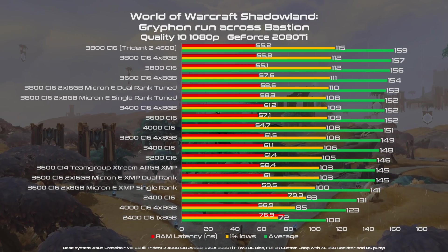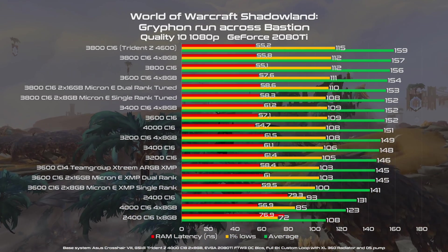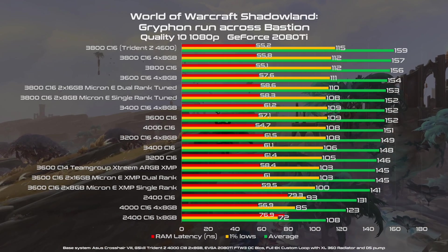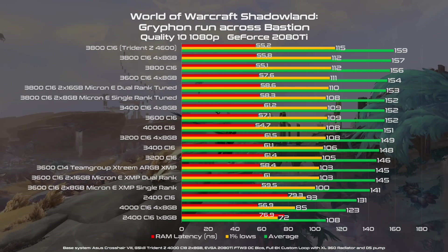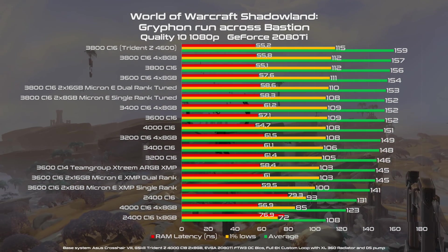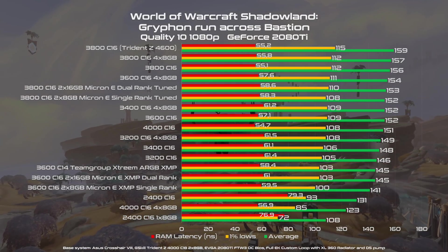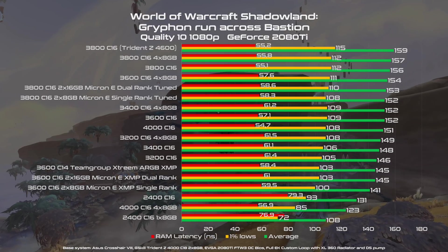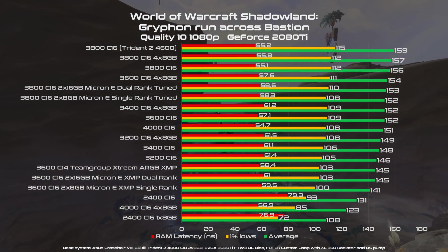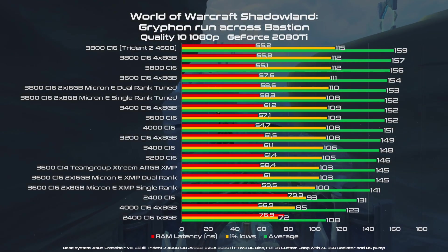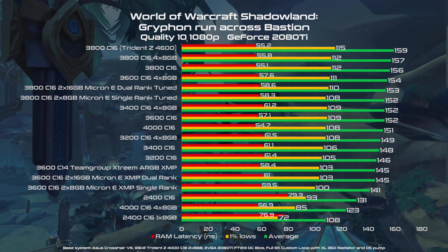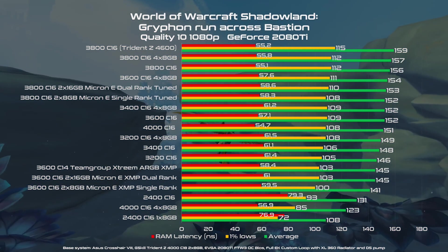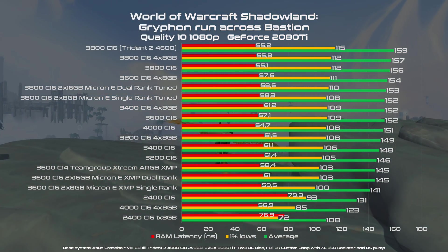The CPU I used for this memory scaling test is the Ryzen 7 5800X, since it's the best one I tested, and as you can see I tried almost every combination possible. The first thing that stands out is that if you leave your memory at XMP — no matter whether it's Micron E or a Team Group Xtreme C14 3600MHz, a very nice kit using selected Samsung B-Die — the results are pretty much limited, around 145 FPS. So it's always good to tune the memory manually across all the timings.